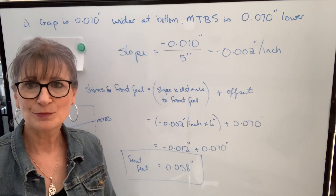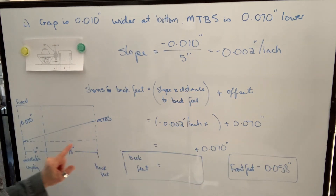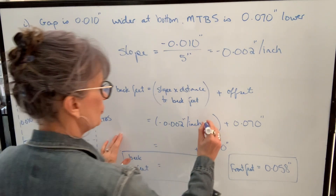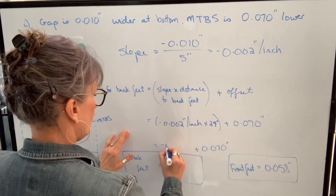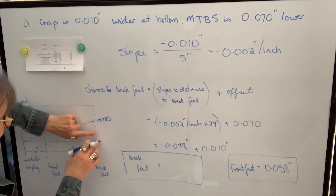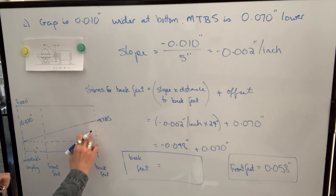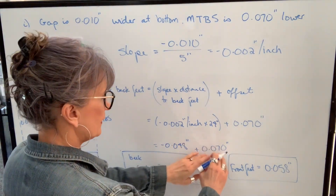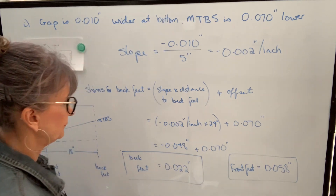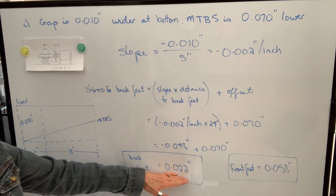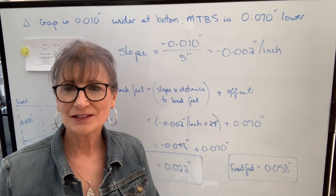We do the same thing for the back feet, just changing the distance to twenty-four inches. Slope times distance: negative two-thousandths times twenty-four gives negative forty-eight-thousandths, plus seventy-thousandths equals twenty-two-thousandths. So we need twenty-two-thousandths shims under the back feet and fifty-eight-thousandths under the front feet, and that will solve both the angular and offset misalignment all at once.